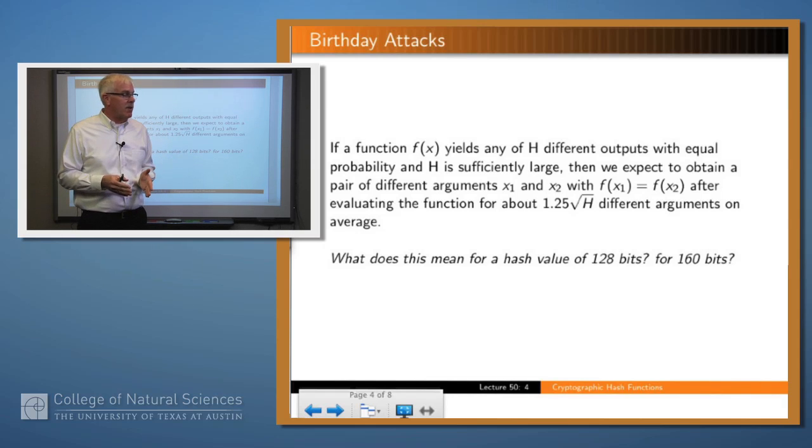So, for example, if we've got a hash value of 128 bits, that means there's 2 to the 128 possible values. The square root of that is 2 to the 64. So, what that means is that if we have MD5, for example, on average, you have to look at 1.25 times 2 to the 64 values before you'll find a collision. That's a huge set, but you certainly can do that with modern computers.